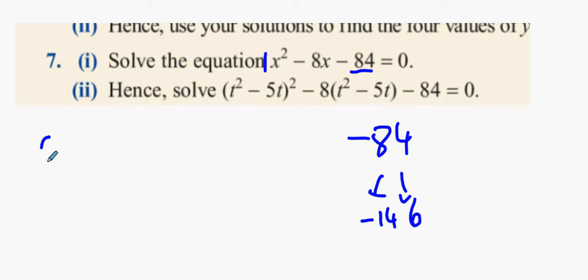Now, this means that it's going to be x minus 14 and then followed by x minus 6. So (x - 14)(x - 6) equal to 0.